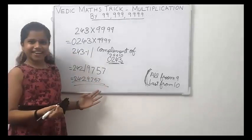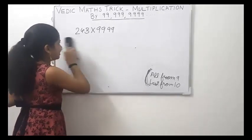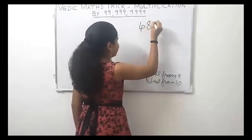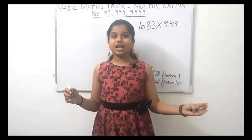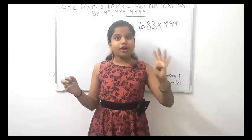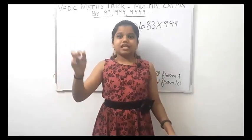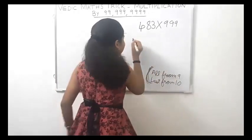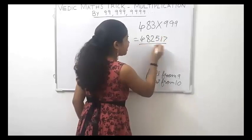This is our answer. Now let us try to do a question in mind. Let us take 483 × 999. In the left part write the predecessor of 483, that is 482, and in the right part write the complement of 483, that is 517. Our answer is 482517.